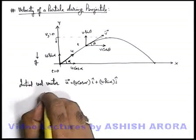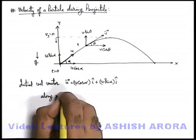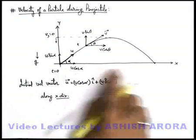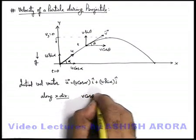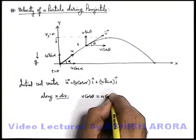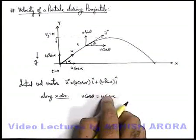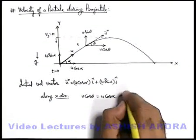Now this v cos theta and v sin theta, the velocity components in x and y directions can be very easily calculated. Like if we talk about along x direction, we can simply state as the particle's motion remains uniform, so we can write v cos theta always it is equal to u cos alpha. Horizontal component never changes. So this is our equation one.